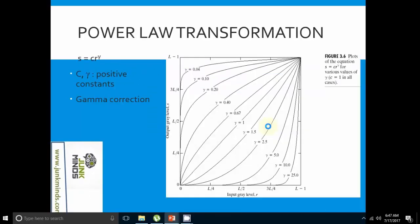Power law transformation is given by the formula S = C·R^γ, where C and gamma are positive constants. Power law curves with fractional values of gamma map a narrow range of dark input values into a wider range of output values, with the opposite being true for higher input levels. When C·γ = 1, it is the identity function.